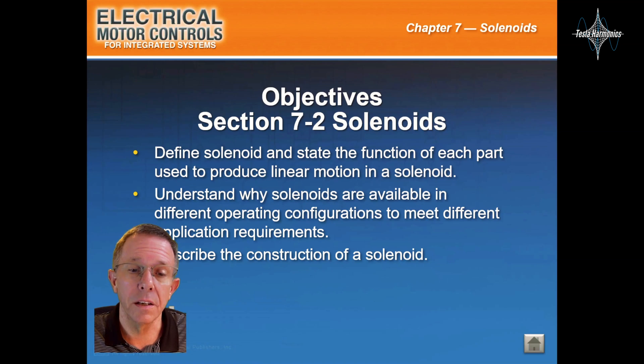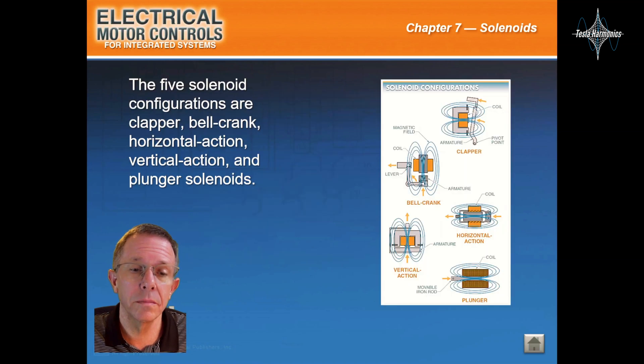This will be section 7-2 solenoids. The five solenoid configurations are clapper, bell crank, horizontal action, vertical action, and plunger solenoids.